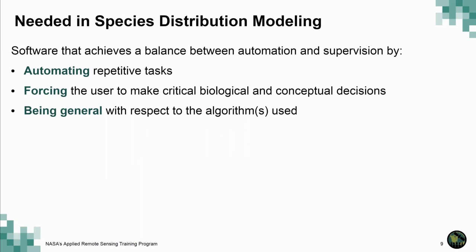Until recently there were two typical ways to approach species distribution modeling. The first was using software with graphic user interfaces, or GUIs, that were friendly and easy to use. However, these tended to be very inflexible in terms of the variety of tools available, were not updated frequently, making it difficult to keep up with cutting-edge techniques, and often led to users using them inappropriately.